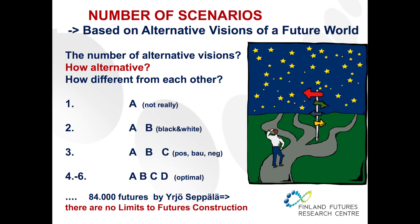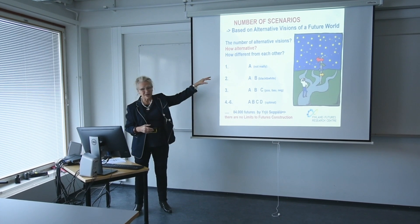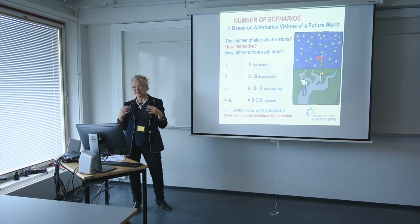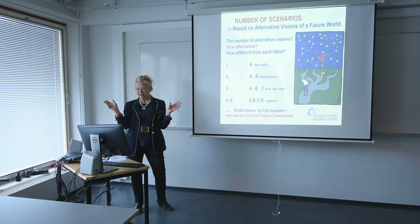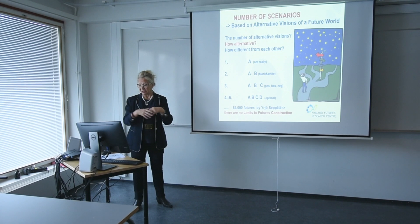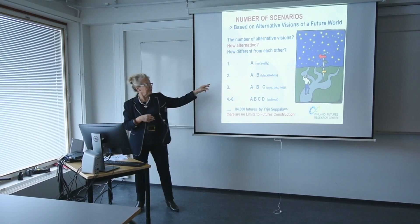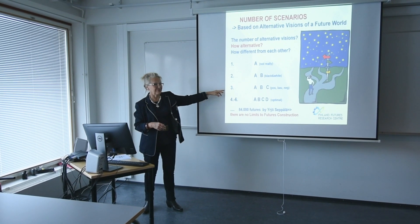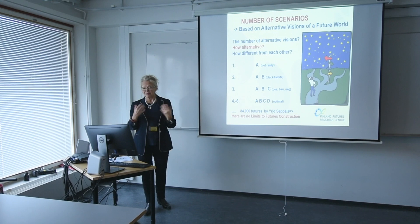How about the number of scenarios? How many should be made within, say, a company strategy process? They should be different from each other. If we have one scenario, it is really not a scenario — a scenario is part of a set. If we have two scenarios, they usually become black and white: one positive, one negative. If we have three scenarios, very often one becomes very positive, one negative, and one business as usual.